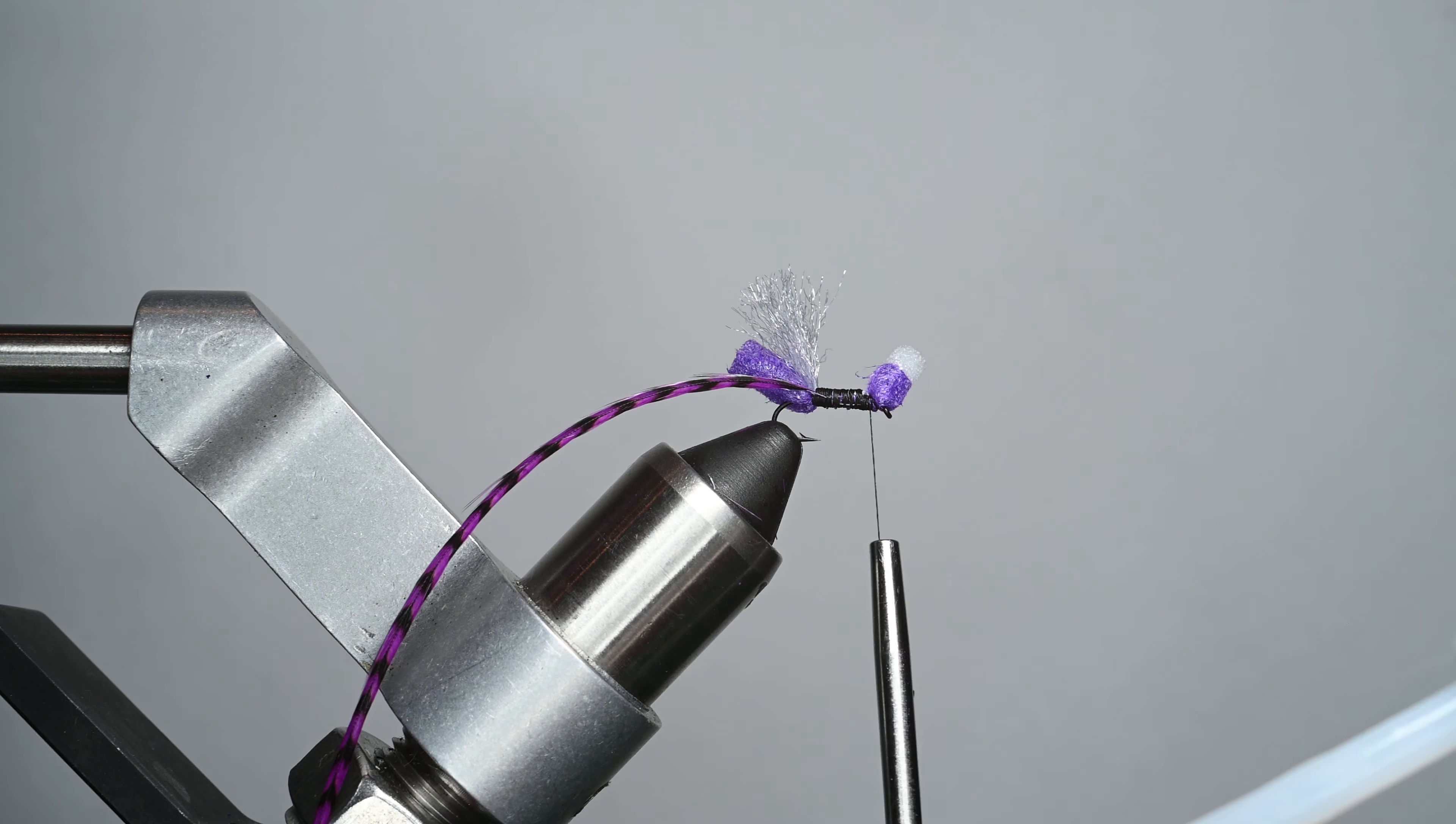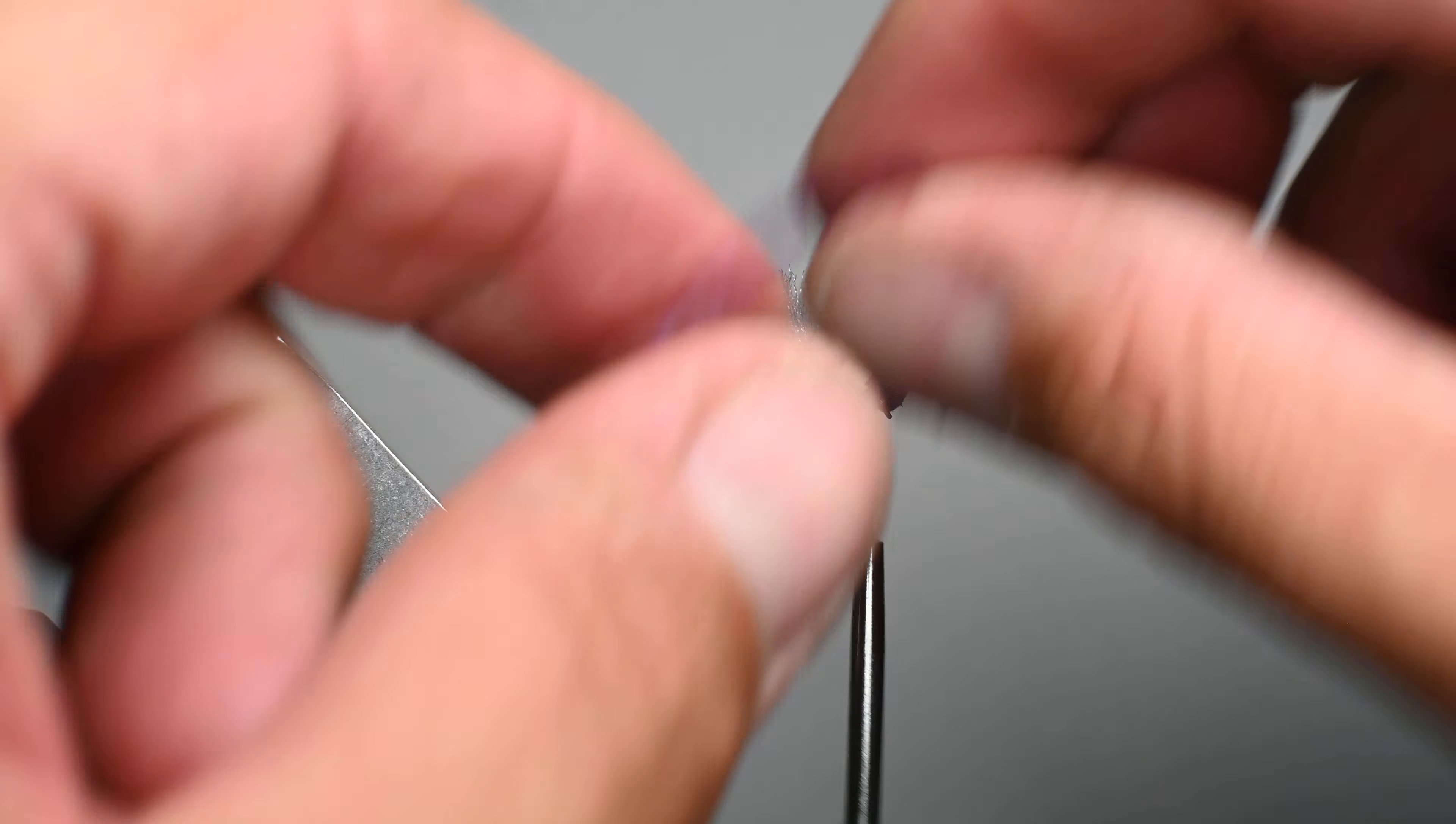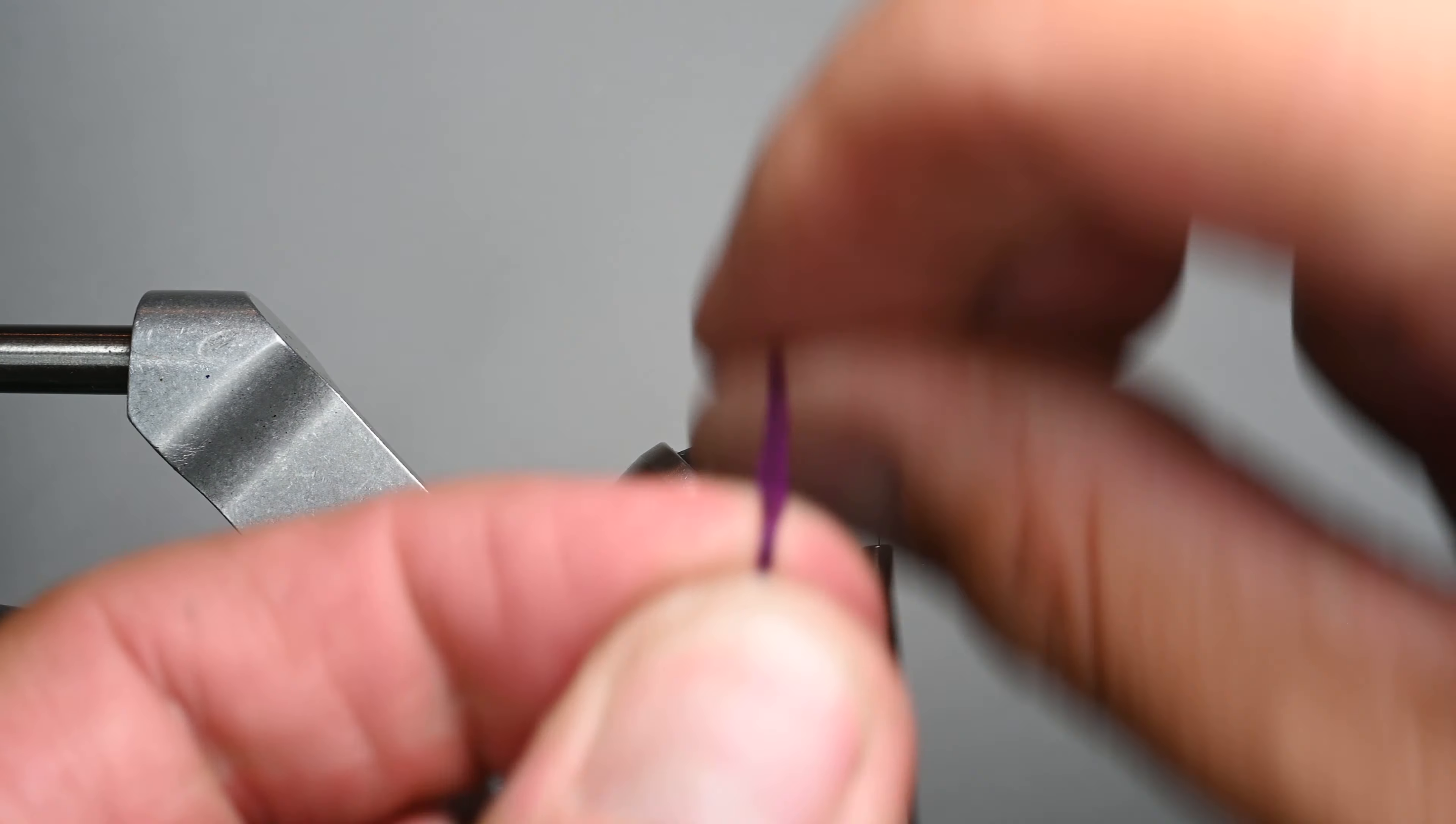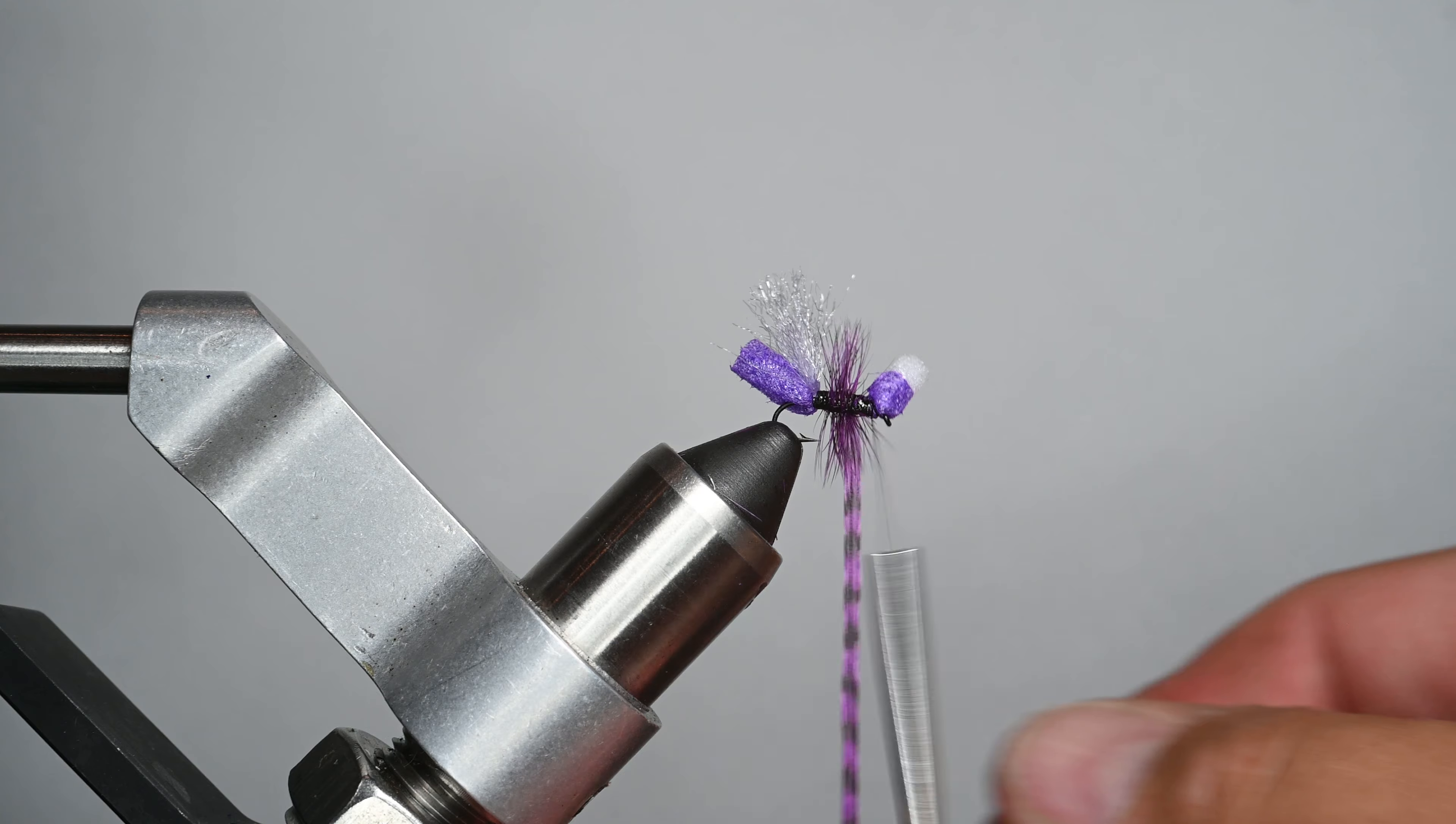I'm going to just load it on right here on the top. This is going to make it so it doesn't twist on us, but we've got to move really quick here wrapping our hackle because this is going to help make the hackle a little bit more durable. It's going to bond that Z-cement to the thread to the fly.